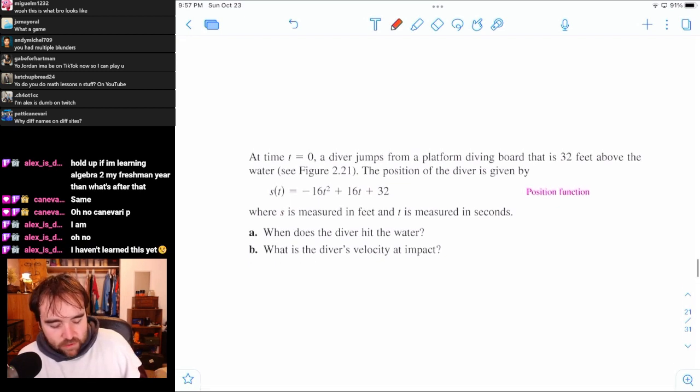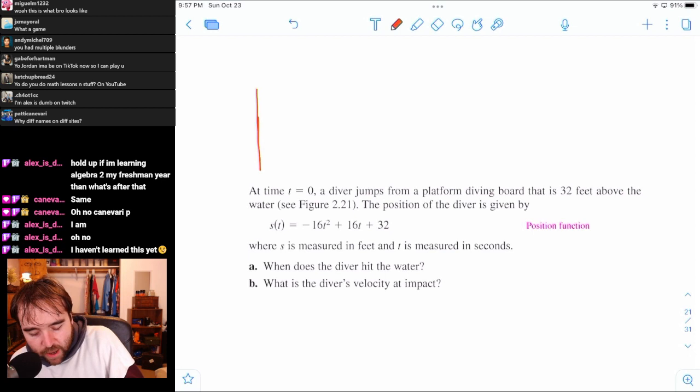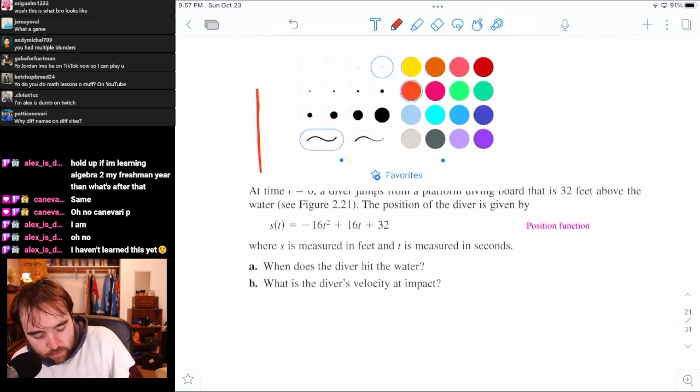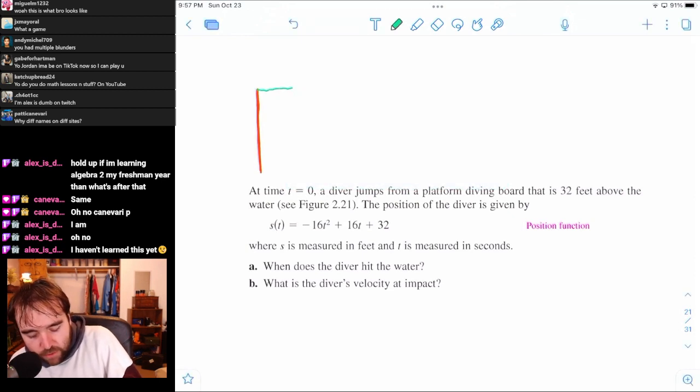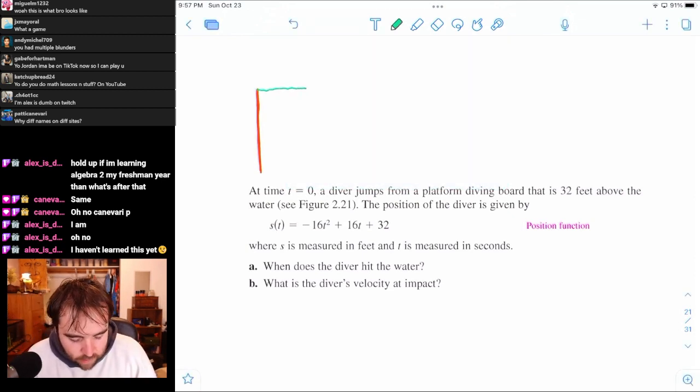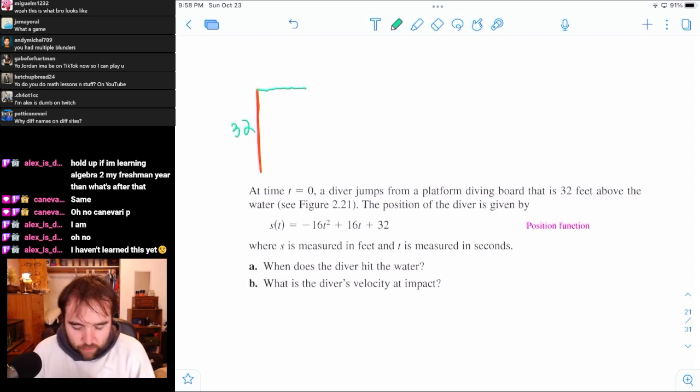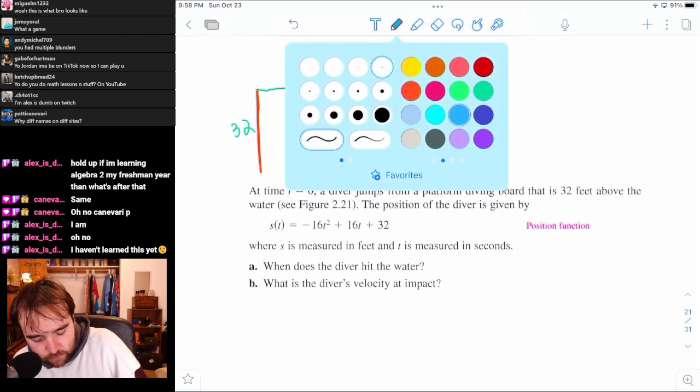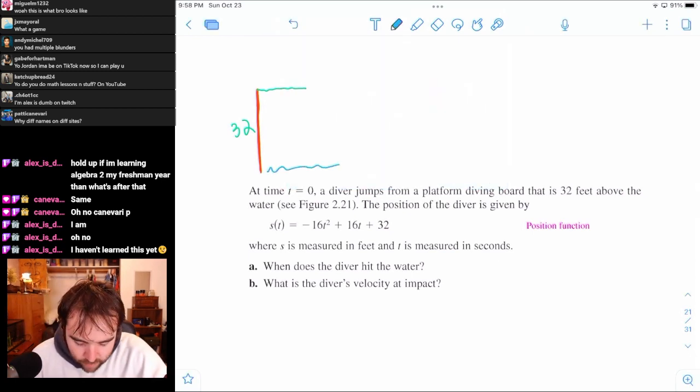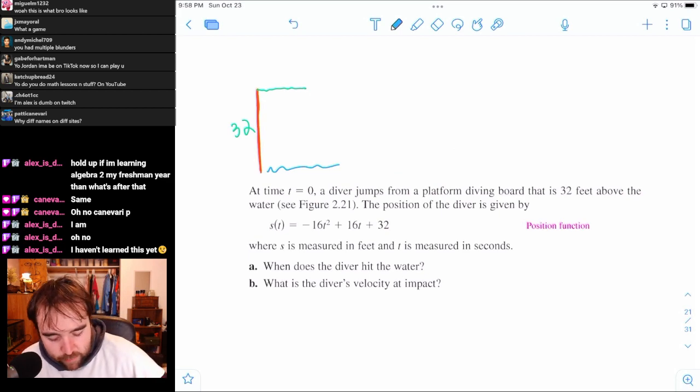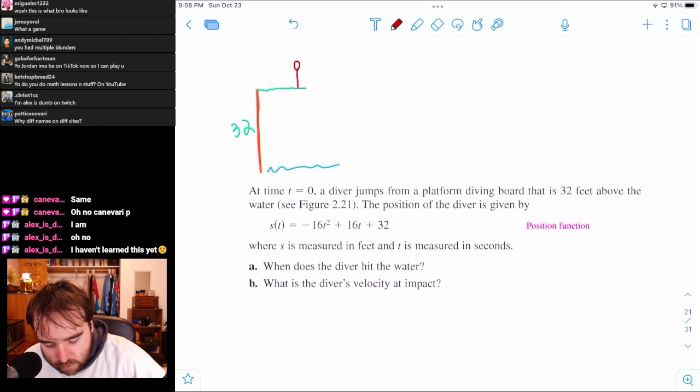So let's draw the picture first, just so we have a good idea. So we got our diving board. That color-ish, right? That's probably the closest notability is going to have to a diving board color. And it's 32 feet above the board. 32 feet above the ground, or above the water. And there's our water. And we got a diver up here. Little diver.